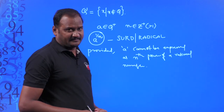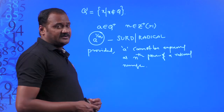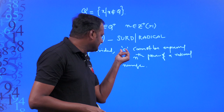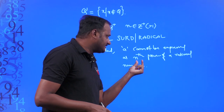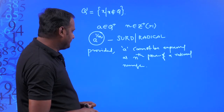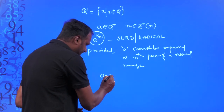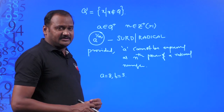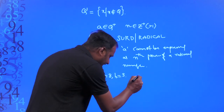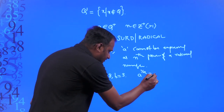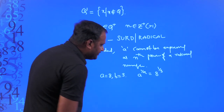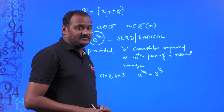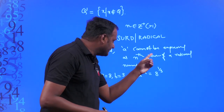What does this condition mean? If I write any number in the form of a to the power of 1 by n, can I consider that number a surd? No, it must also satisfy the condition that a cannot be expressed as the nth power of a rational number. For example, taking a equal to 8 and n equal to 3, we form 8 to the power of 1 by 3. This is in the form of a to the power of 1 by n, but we cannot call 8 to the power of 1 by 3 a surd, because it must satisfy that condition too.